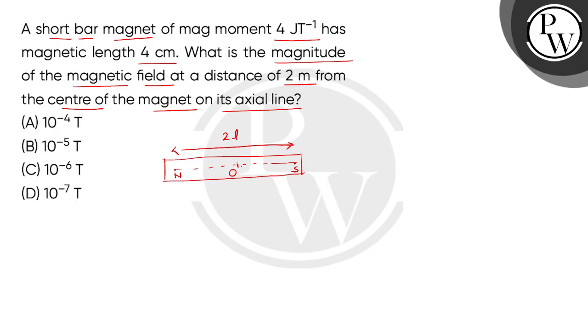Now, when we say the extended line of this magnet, here we have a point, suppose this point is P, which is the distance from the center of the magnet, 2 meters. Now, the magnetic length, that is 4 cm, which we express as 2L.